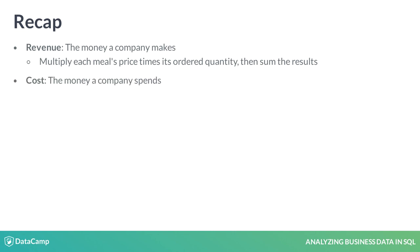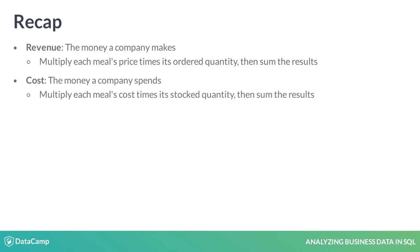Cost is the money a company spends, which in Deliver's case is the money it pays to eateries to stock their meals. Calculate cost by multiplying each meal's cost by its ordered quantity, then sum the results. Finally, profit is the difference between revenue and cost.